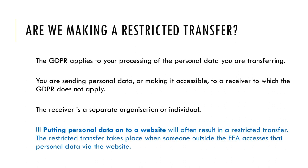Transfer does not mean the same as transit. If personal data is electronically routed through a non-EU country but the transfer is actually from one EU country to another EU country, it is not a restricted transfer. For example: personal data transferred from a controller in France to a controller in Ireland — both EU countries — via a server in Australia, where there is no intention that the data will be accessed or manipulated in Australia. Therefore, the transfer is only to Ireland.